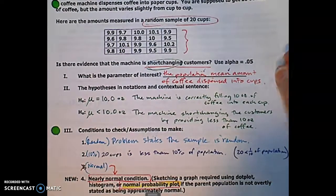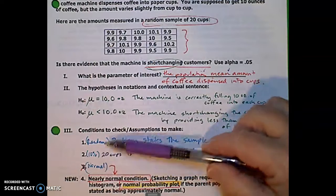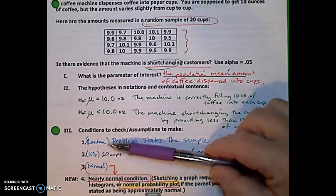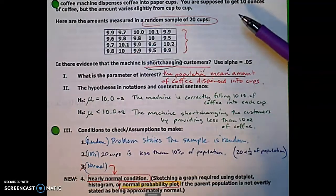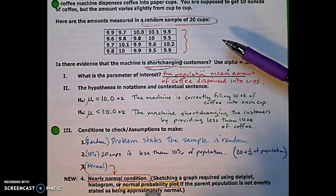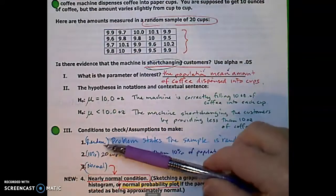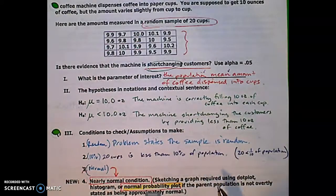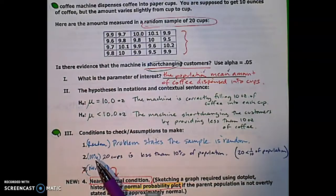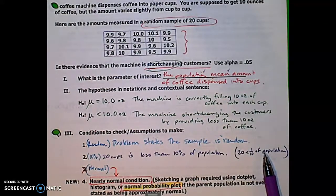We do need to check assumptions and conditions. So actually, if we look at what I had here for number one and three, randomness and a normal distribution, both of those kind of talk about the independence assumption. Really what we want to know is is each cup of coffee independent of the other. So the independence assumption is normally or usually covered by talking about randomness and if the distribution is normal. So first, random condition. The problem states that the sample is random. That's the easiest scenario. The second condition that we need to think about is 10% condition. Make sure we're not using too much of the population. 20 cups of coffee is definitely less than 10% of the population. Or we could write 20 is less than one-tenth of the population of all the cups of coffee.